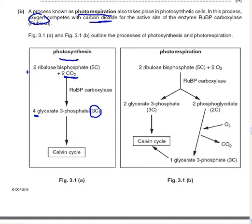Ribulose bisphosphate — there are 2 of them, each with 5 carbons — gives 10 carbons total. Add 2 carbons from carbon dioxide, that makes 12. Each glycerate-3-phosphate is 3 carbons; 4 of them is 4 × 3 = 12. The carbon balance checks out.